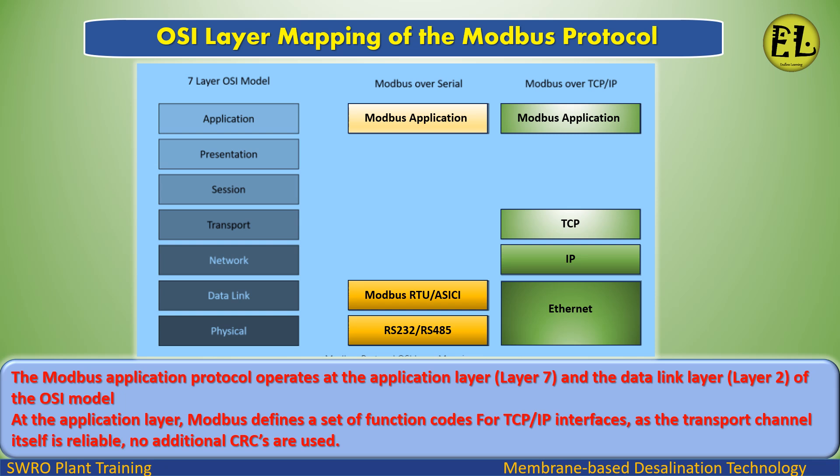OSI layer mapping of the Modbus protocol: The Modbus application protocol operates at the application layer (layer 7) and the data link layer (layer 2) of the OSI model. At the application layer, Modbus defines a set of function codes for TCP/IP interfaces. As the transport channel itself is reliable, no additional CRCs are used.